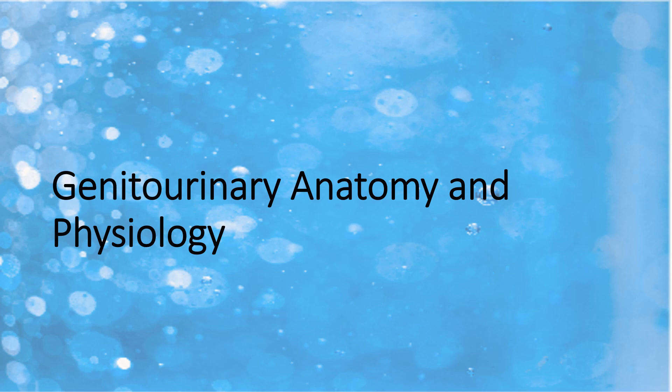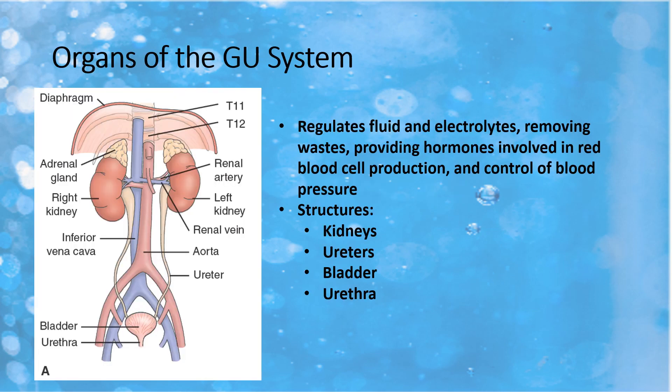We're going to start with a review of the GU anatomy and physiology. Each block is going to build upon this information from your prereqs. The organs of the GU system include the kidneys, ureter, bladder, and urethra. These all work together to regulate fluid and electrolytes, filter and remove waste products, provide hormones involved with red blood cell production, and help control blood pressure. The kidneys are the main organ in the GU system, doing the majority of the work.